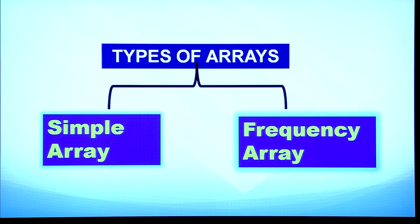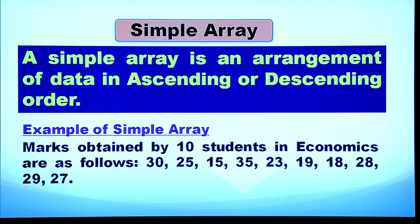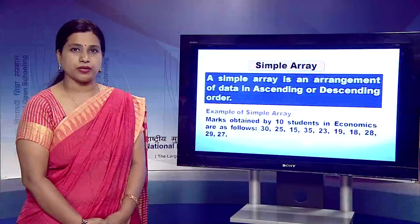A simple array is an arrangement of data either in ascending order or descending order. Let us take an example: marks obtained by 10 students in economics are 30, 25, 15, 35, 23, 19, 18, 28, 29, and 27.